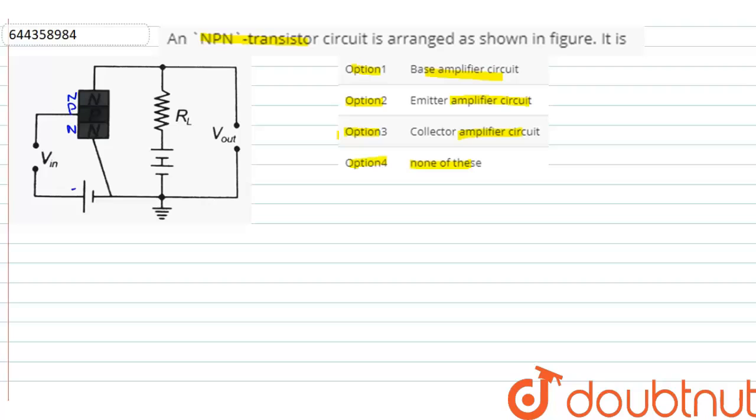Here we can clearly see that the positive terminal of the battery is connected to the positive end of the transistor. So this one is forward bias and in the second half the positive end of the battery is also connected to the negative end of the transistor. So this one is reverse bias.